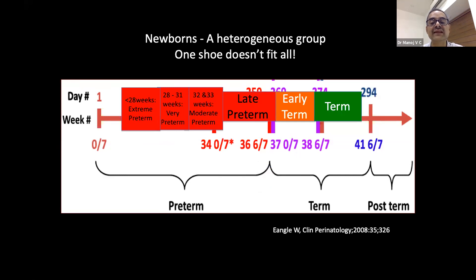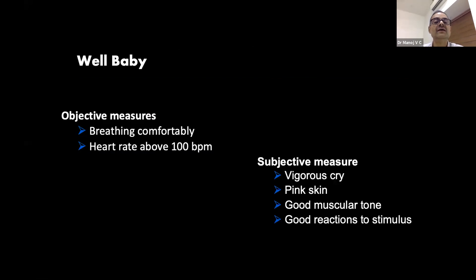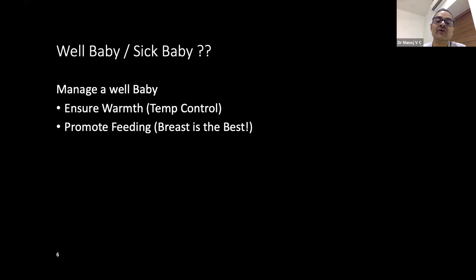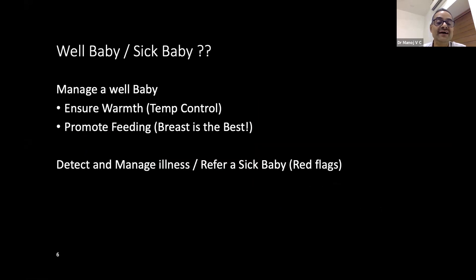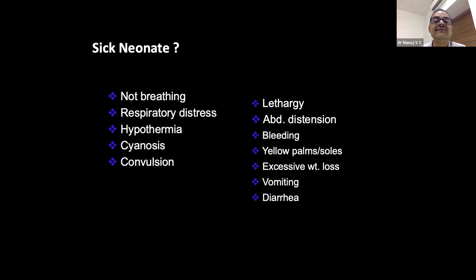A well baby is one who is breathing comfortably, heart rate above 100, vigorous cry, pink skin, good muscular tone. This baby doesn't need to be transported — manage with the mother, ensure warmth, and promote breastfeeding. Red flags requiring transport include: not breathing, respiratory distress, hypothermia, cyanosis, convulsions, lethargy, abdominal distension, bleeding, jaundice, and similar problems.